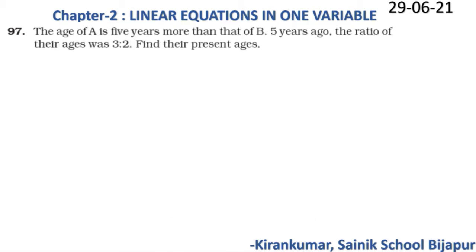Question 97: The age of A is five years more than that of B. Five years ago, the ratio of their ages was 3:2. Find their present ages.